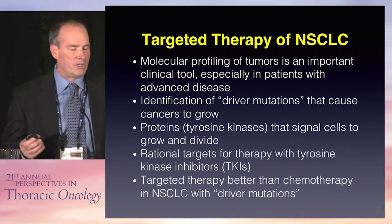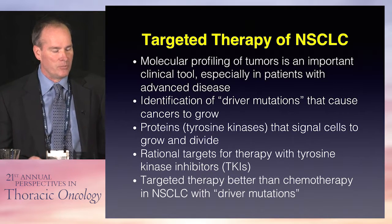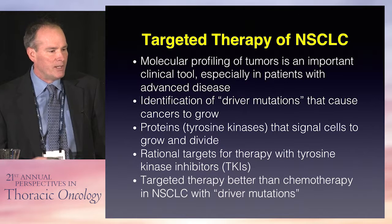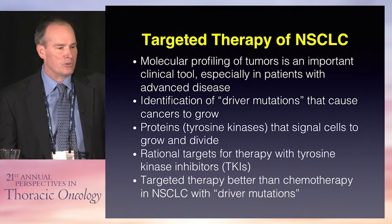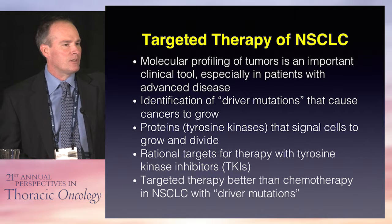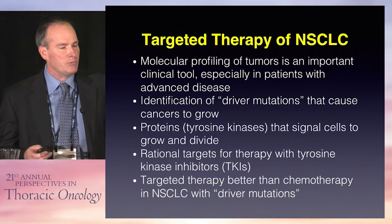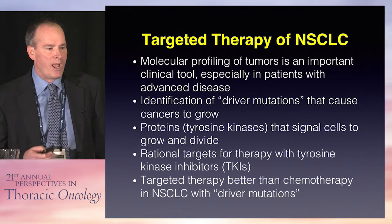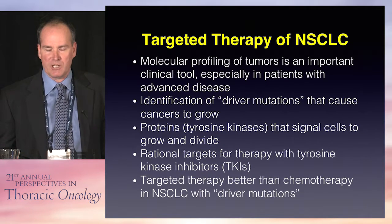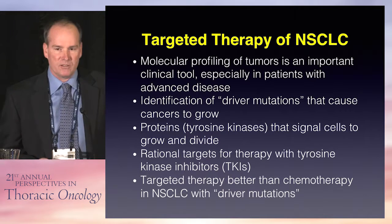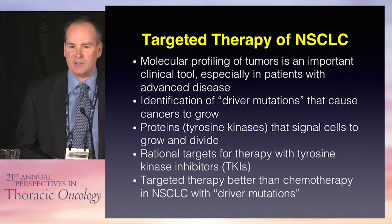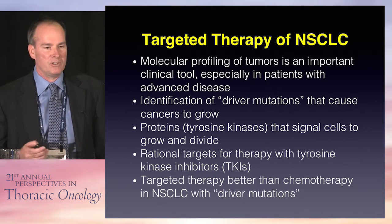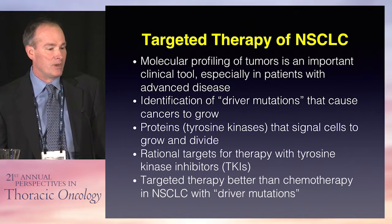Targeted therapy of non-small cell lung cancer is an important part of treatment. Molecular profiling has really become a valuable tool to identify driver mutations associated with oncogenesis. Most of these mutations involve proteins that are tyrosine kinases, and we can use these as rational targets for therapy using tyrosine kinase inhibitors. Initial therapy with targeted therapy for ALK mutations and EGFR-mutated lung cancers is better than chemotherapy.